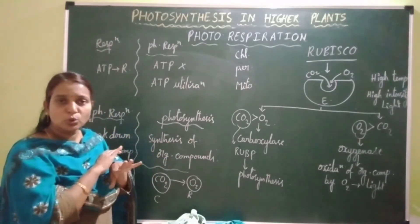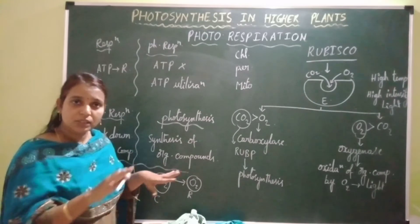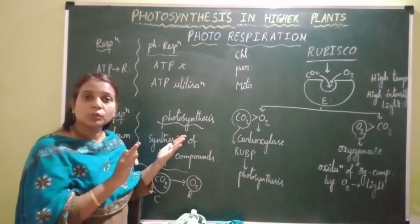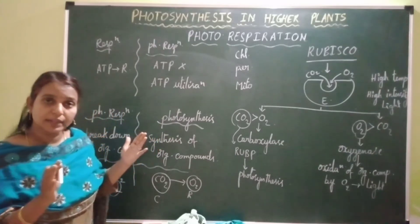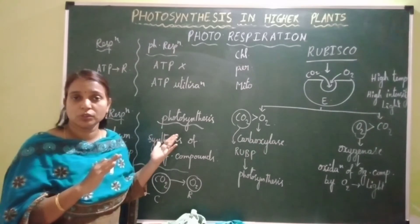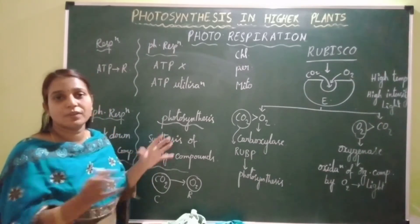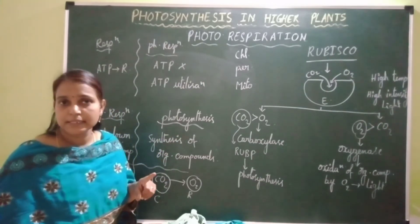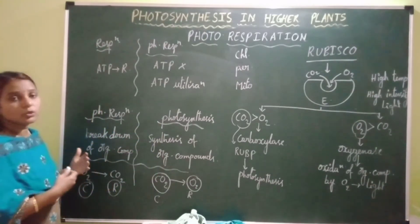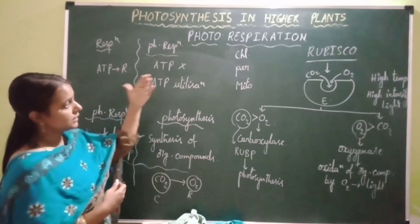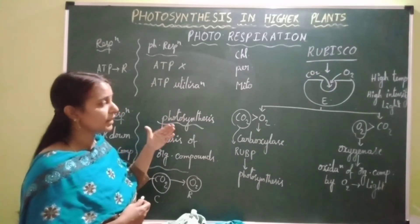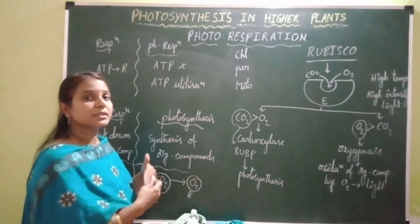Since there is no synthesis of energy and no synthesis of food, and there is utilization of energy instead of synthesis of food, photorespiration is considered a wasteful process. It occurs in C3 plants but does not occur in C4 plants. Now let's study the details of this pathway involving the three organelles — chloroplast, peroxisome, and mitochondrion.